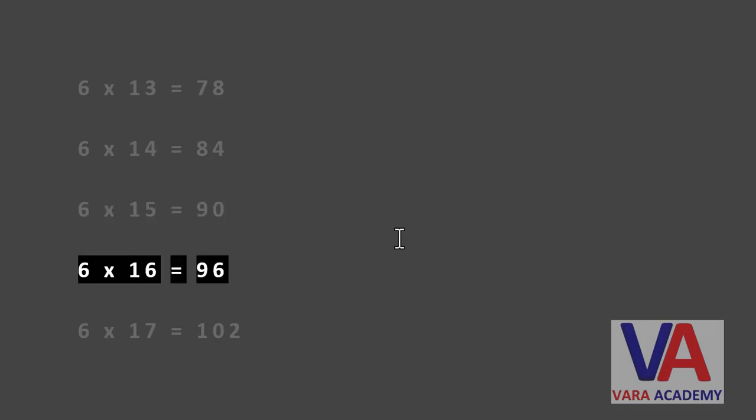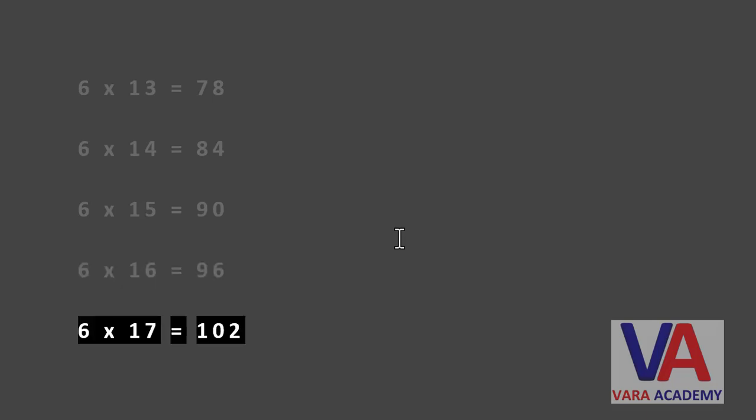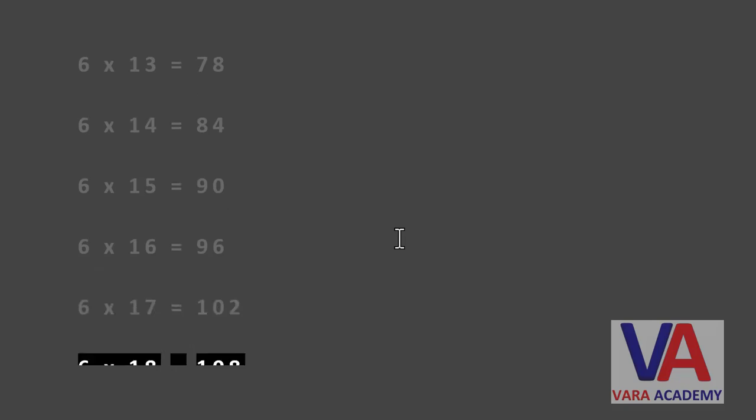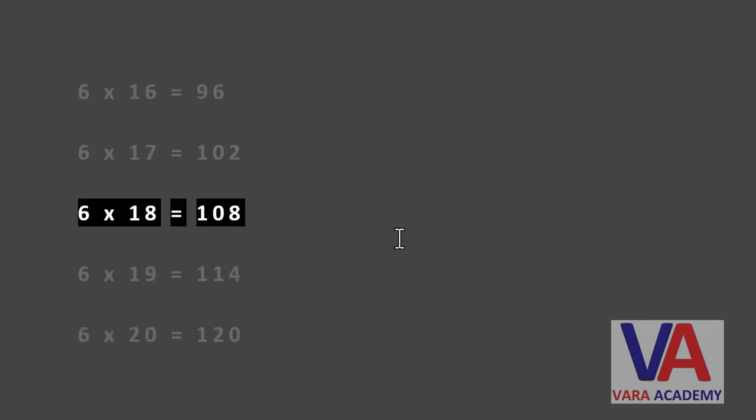Six times sixteen equals ninety six. Six times seventeen equals one hundred and two. Six times eighteen equals one hundred and eight.